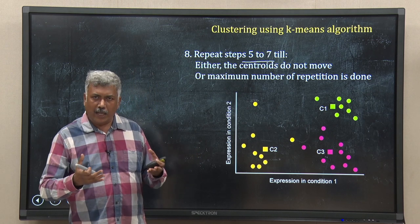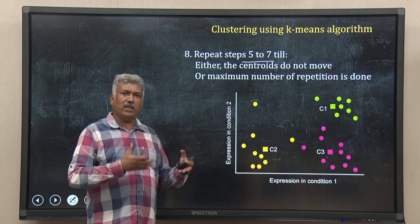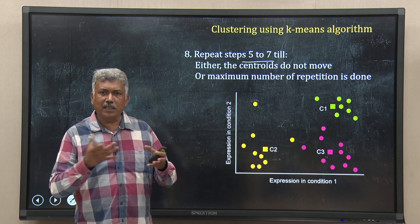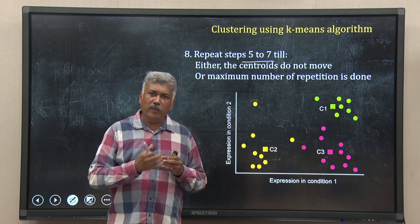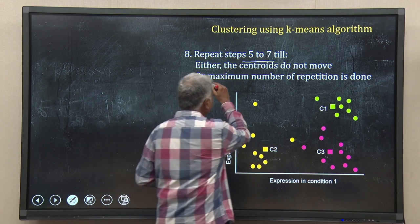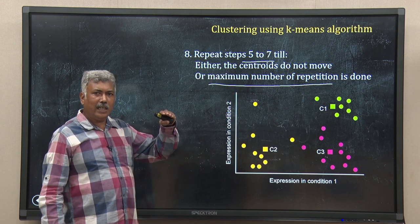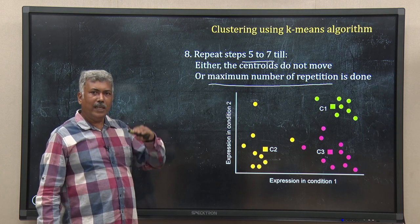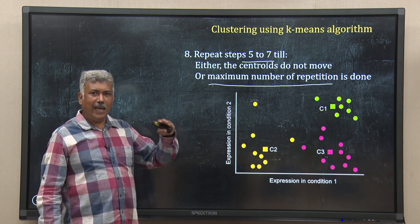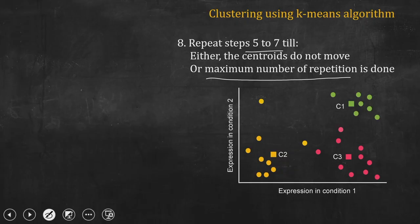But in some cases it may not happen — you keep repeating it 10, 20, 30 times and the clusters are still reassigning and centroids are still moving. So you have to stop somewhere — that is why you may set a maximum number of iterations in your algorithm. If you hit that maximum iteration, you stop and report the last result as your clustering result. Either you use the centroid-not-moving criterion or a maximum iteration criterion.